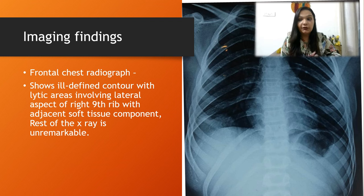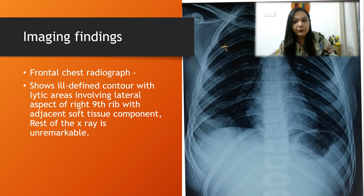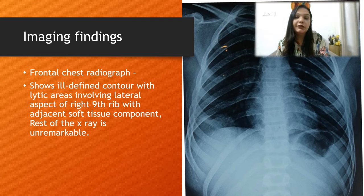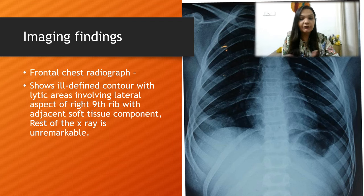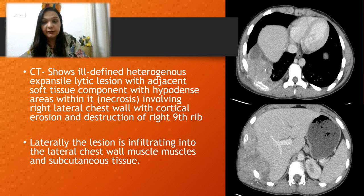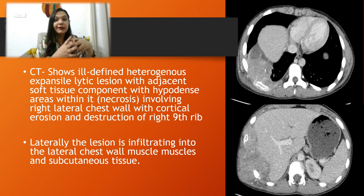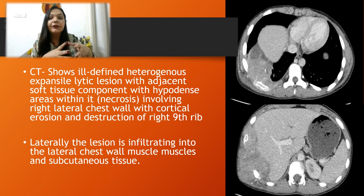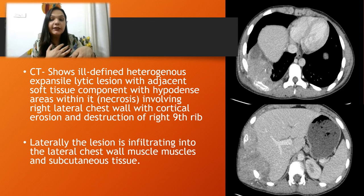On X-ray, we identified an ill-defined contour lytic area involving the lateral aspect of the ninth rib with an adjacent soft tissue component. On CECT chest, we saw an ill-defined heterogeneous expansile lesion involving the adjacent soft tissue with hypodense areas representing necrosis, cortical erosion, and destruction of the ninth rib. Laterally, the lesion was also seen infiltrating the lateral chest wall muscles and subcutaneous tissue.